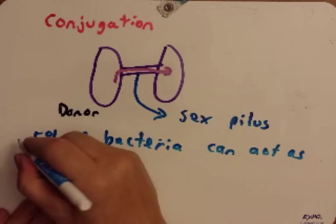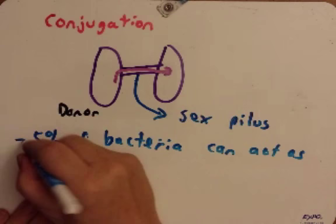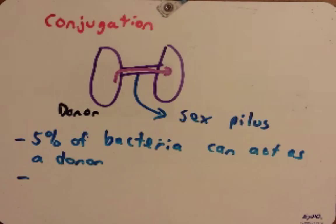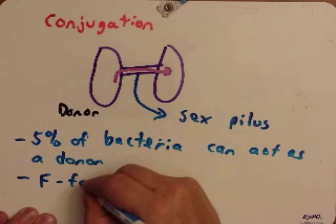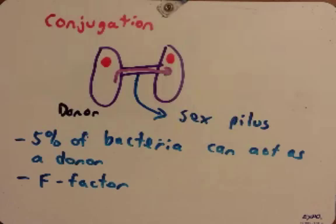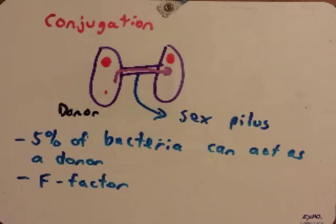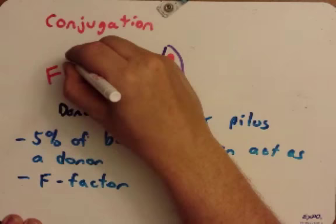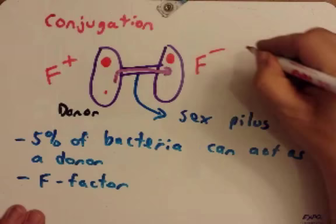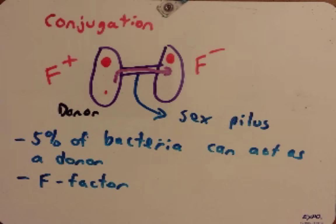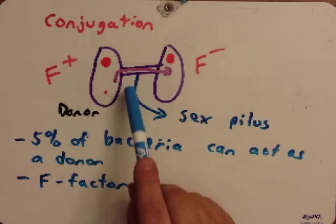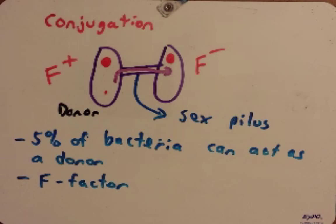It doesn't go in the reverse — only a small percentage can act as a donor. Those donor cells that generate the sex pilus have a small circular piece of DNA in them that's not part of the chromosome; it's extra to the chromosome and provides this ability. They call that the F factor. Both strains have the nucleoid — the chromosomal DNA — but those that have the F factor can act as a donor. Strains with the F factor are called F-plus, and those without it are called F-minus. The genes on this F factor are all necessary to make the sex pilus.